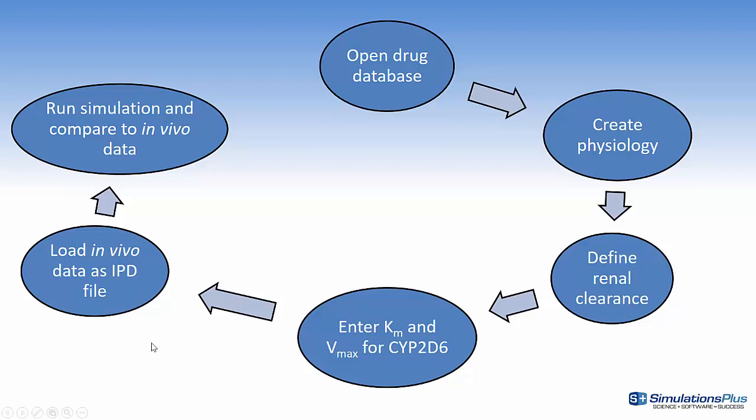We're going to show the in vivo data as an IPD file. This has already been loaded into the database. I'll show the curves. We're going to track the in vivo data for the plasma concentration and the amount in urine for both the metabolites and the parent compound. Then we'll run the simulation and show the graphs where we compare the simulation to the in vivo data.